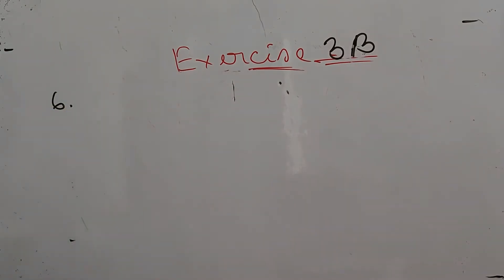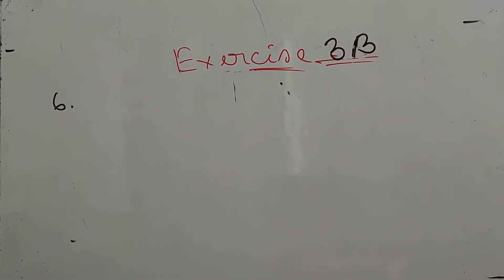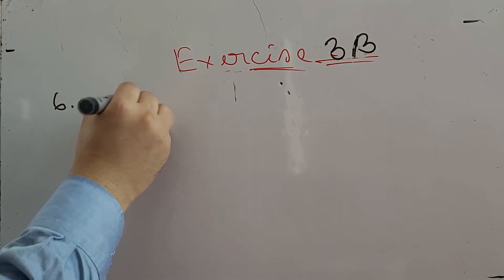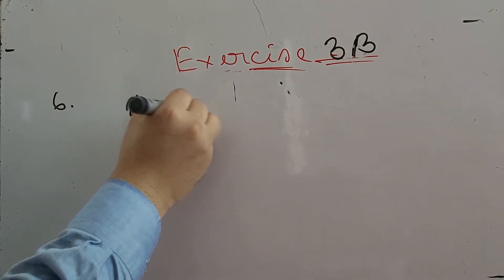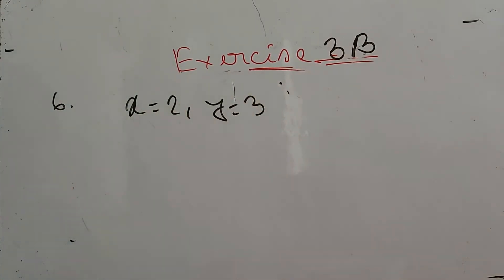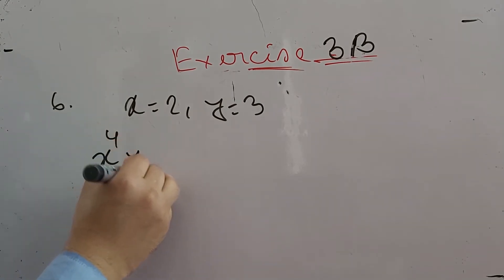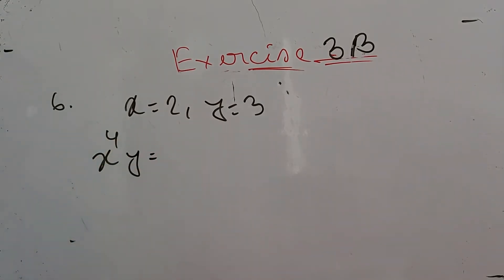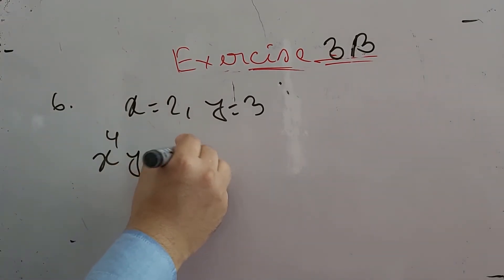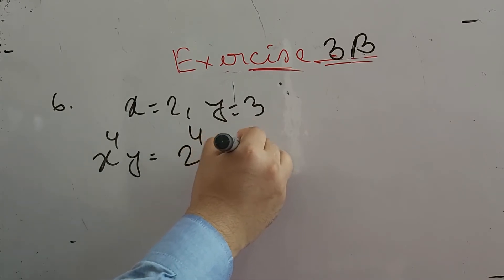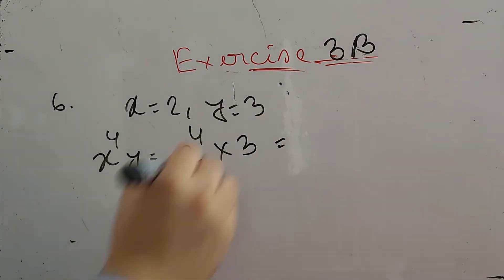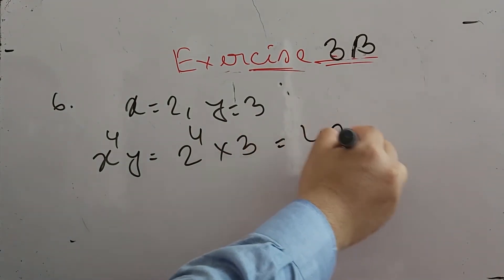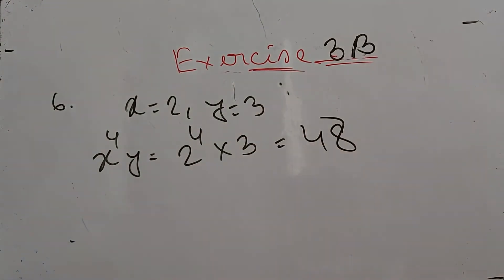Number six: find the value of x to the power four times y, when x equals two, y equals three. We substitute: two to the power four into three. Two to the power four is sixteen, and sixteen times three is forty-eight. Very much simple.